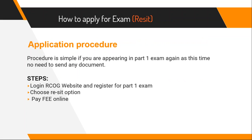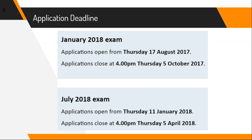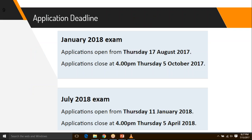If you are re-sitting an exam, the process is simpler. There's no need to send any documents — just log in to the RCOG website, apply online, and they will redirect you to payment. Pay and your seat will be booked. Now let's look at some deadlines for the January and July 2018 exams.